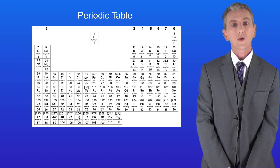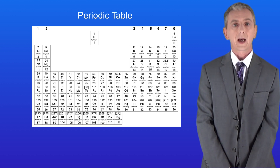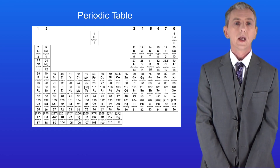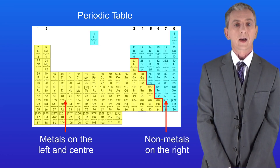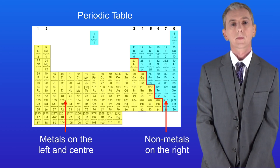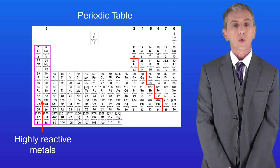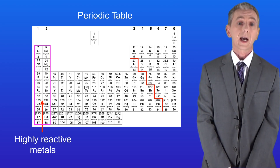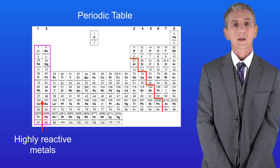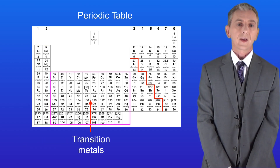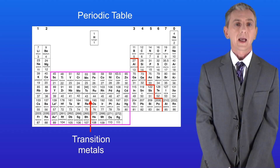The first key fact is that most of the elements are actually metals. We find the metals on the left and the centre of the periodic table. On the right hand side we find the non-metals. We can divide the metals broadly into two categories. On the far left in groups one and two we've got the highly reactive metals. In the centre of the periodic table we've got the transition metals, which are generally less reactive.